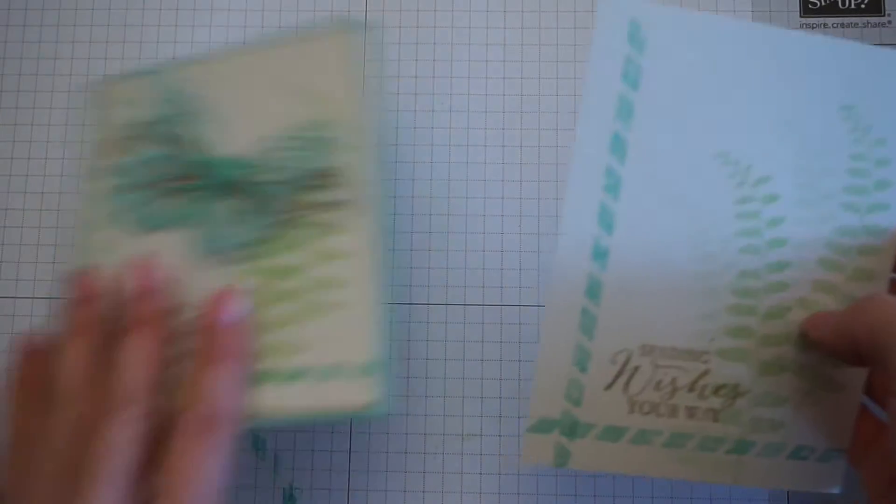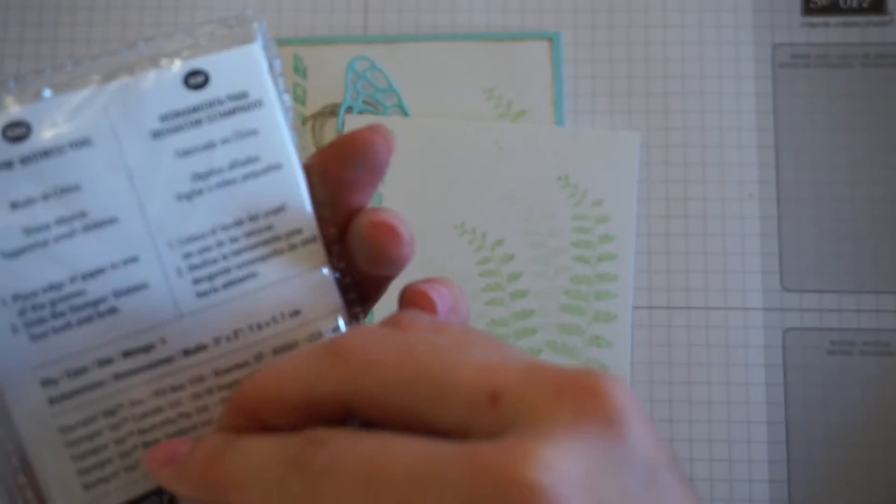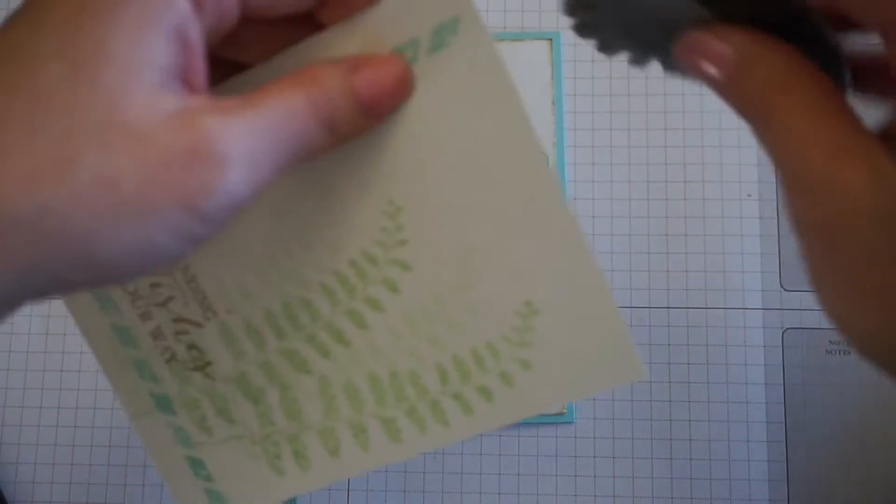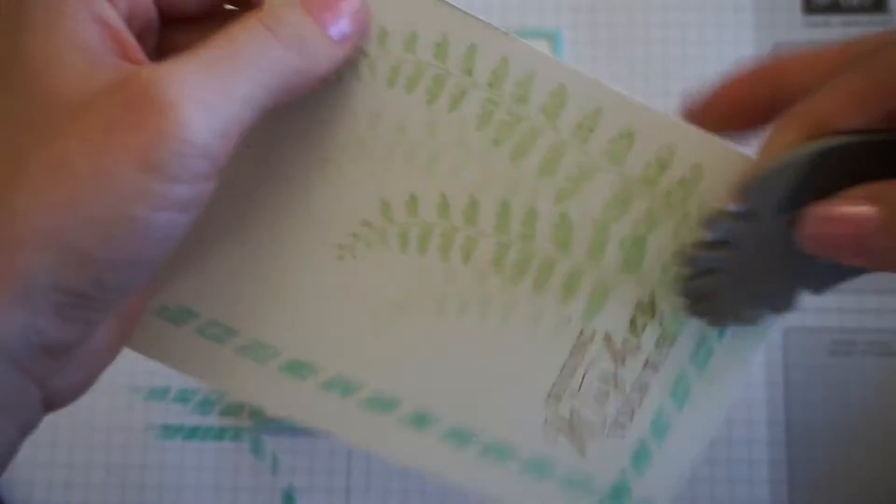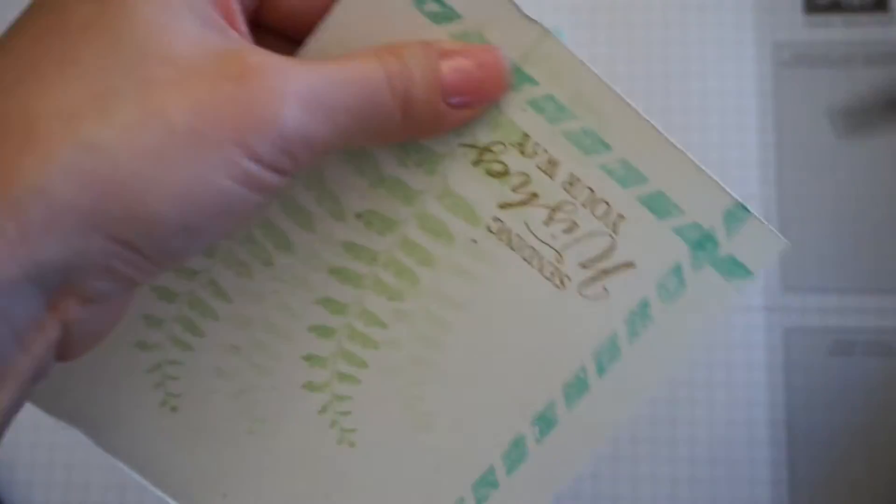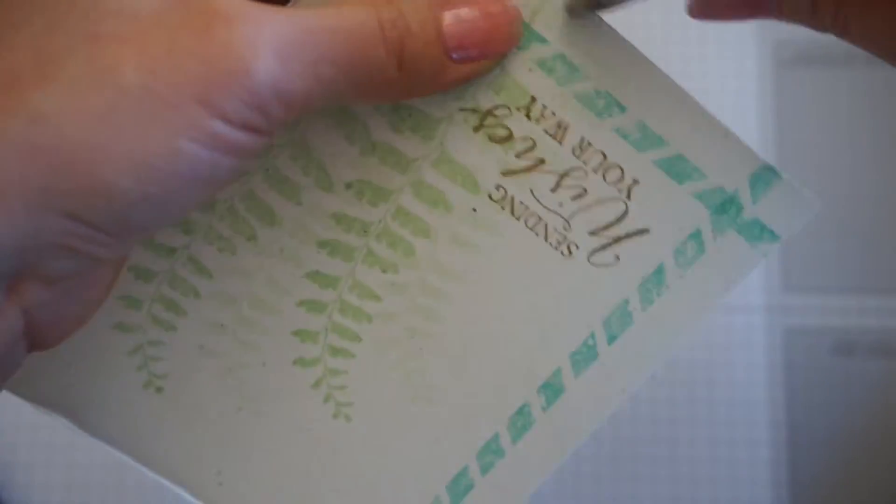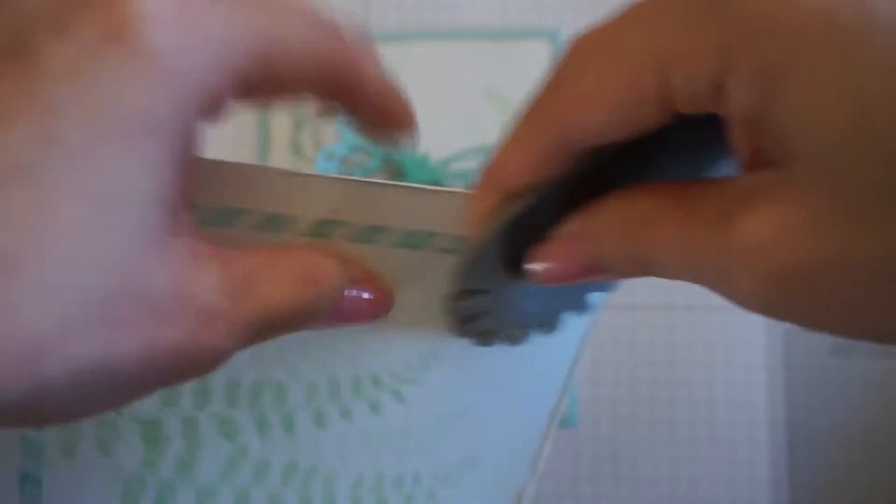For the edges, I distressed the edge using the Stampin' Distress tool. So what I did was I just ran it a few times through the Distress tool. You can do it as much or as little as you want. Get those corners as well.